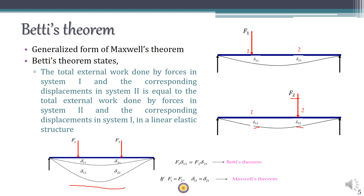According to Betti's theorem, forces in system 1 multiplied by corresponding displacements in system 2 — that is, F1 times delta_12 — should equal forces in system 2 multiplied by displacements in system 1 — that is, F2 times delta_21. If we set F1 equal to F2 equal to F, we get delta_12 equals delta_21, which is exactly Maxwell's theorem.